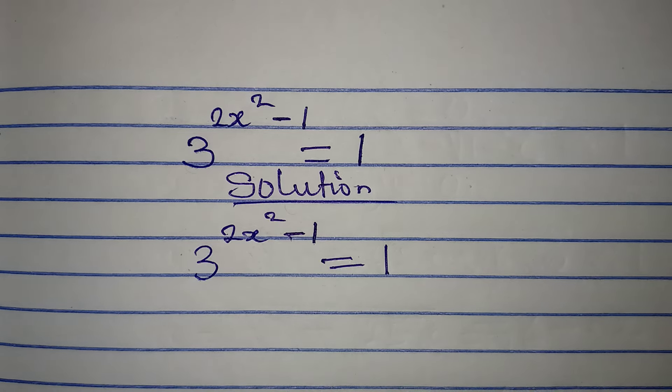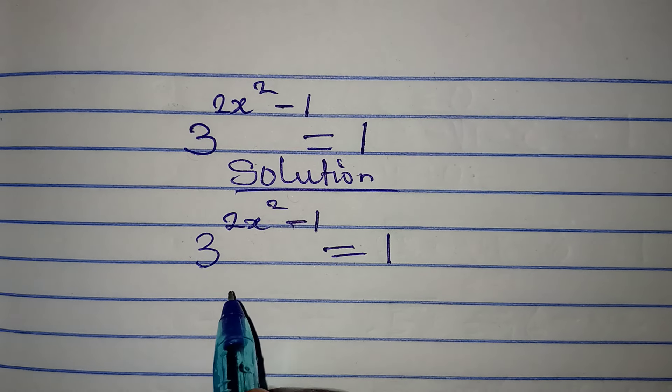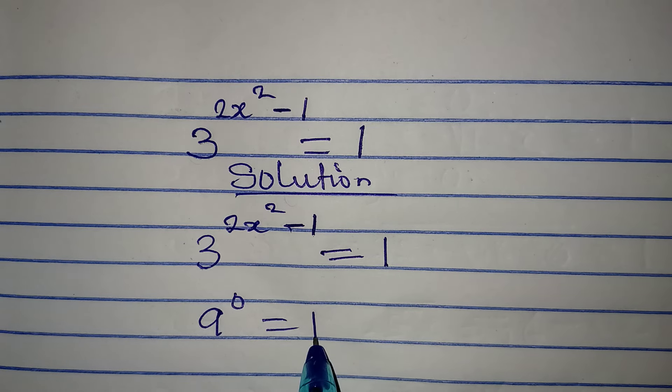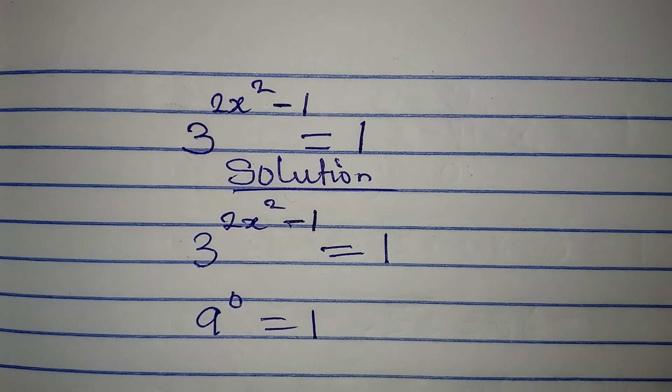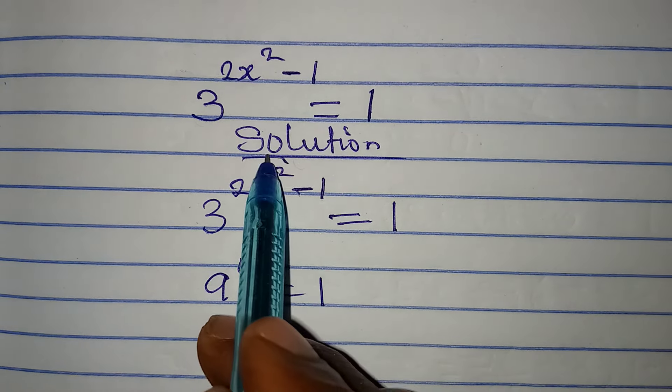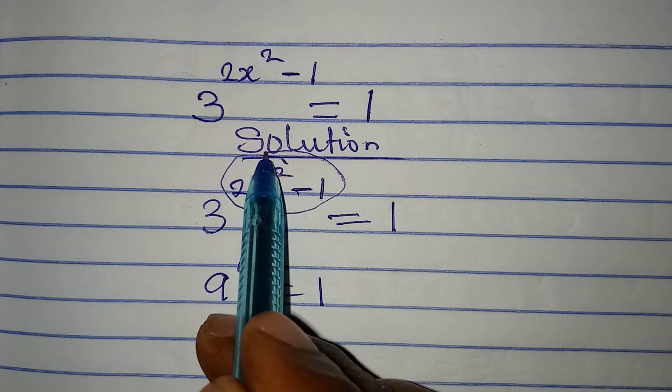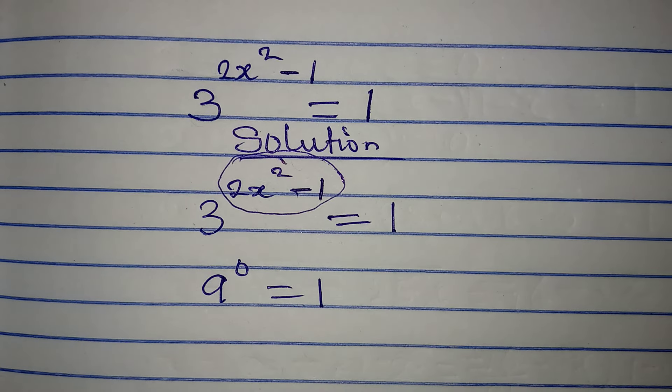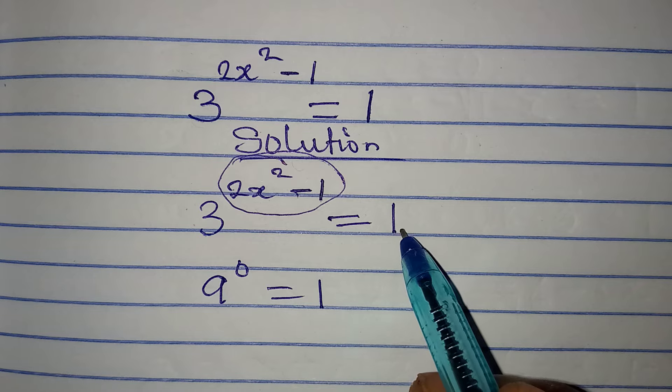Now what do we have to do in this? Remember any number to the power of 0 is equal to 1, right? So this means that the whole of this power here must be equal to 0 for us to have 1 as the final answer.